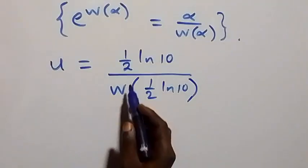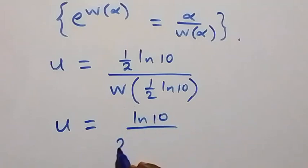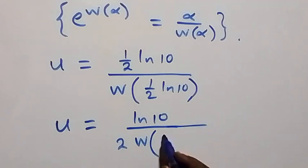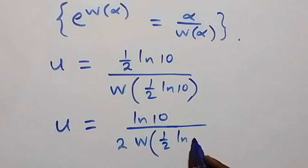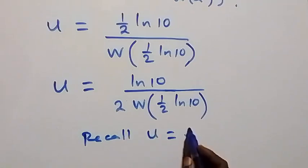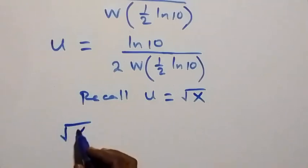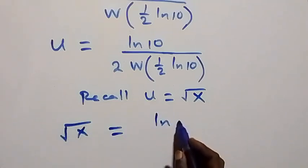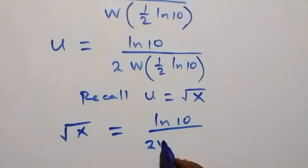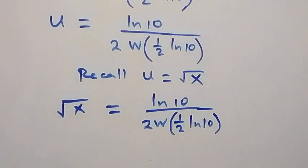We can rewrite this as u equals ln 10 over 2, divided by W(half ln 10), which is ln 10 over (2·W(half ln 10)). Recalling that u equals root x, we have root x equals ln 10 over (2·W(half ln 10)). Since we want x, we square both sides.